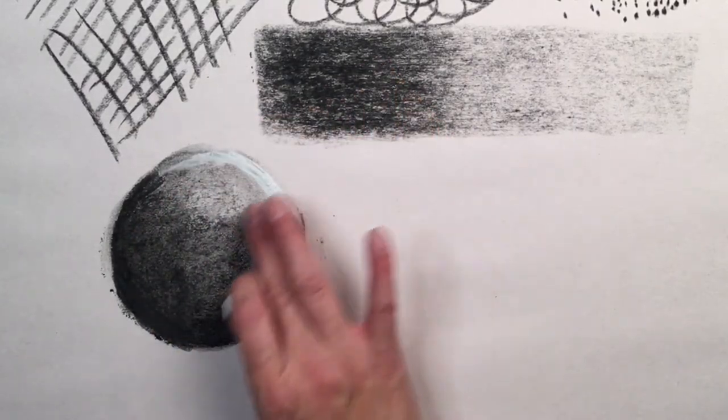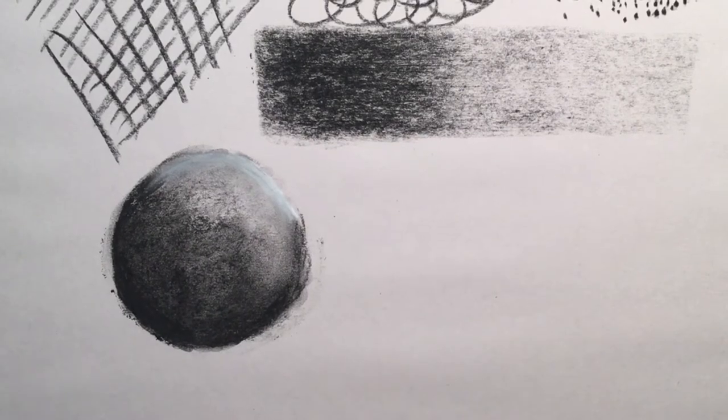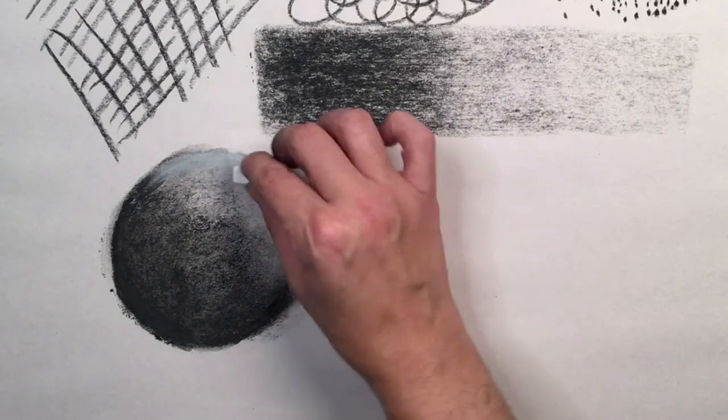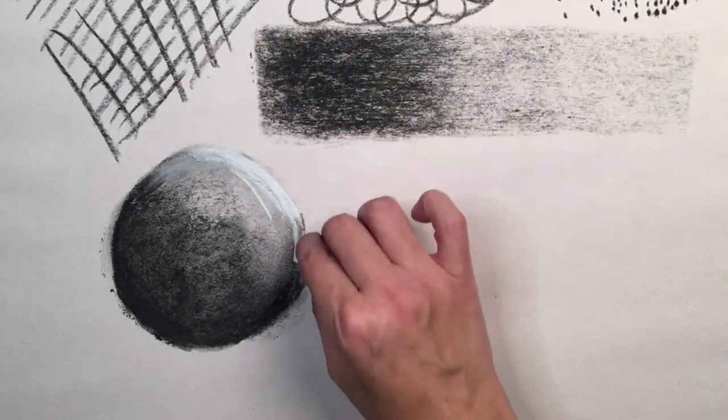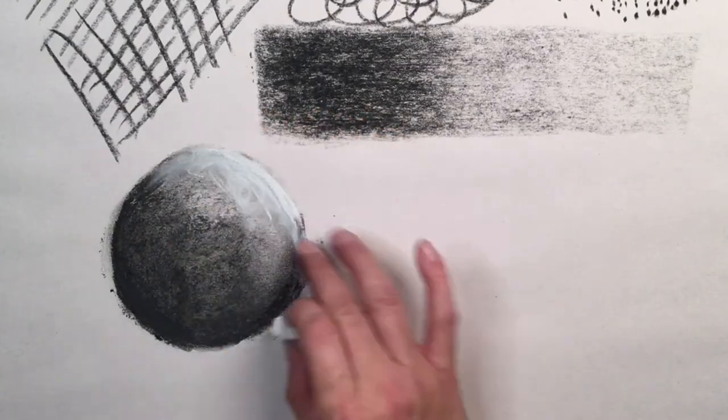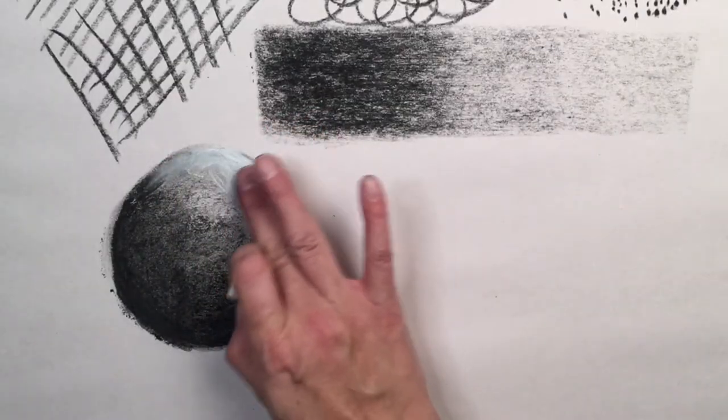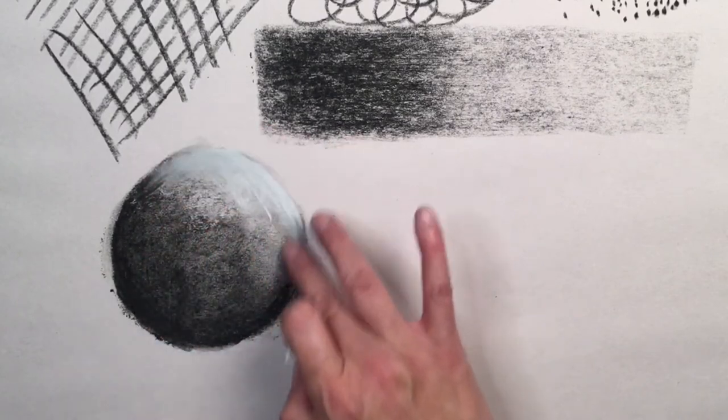Now I'm going to take that white pastel and just highlight that top quarter in the right hand side just to create that illusion of light hitting that sphere and hopefully creating a more three-dimensional look. And I can use my finger to blend that white pastel into the charcoal.